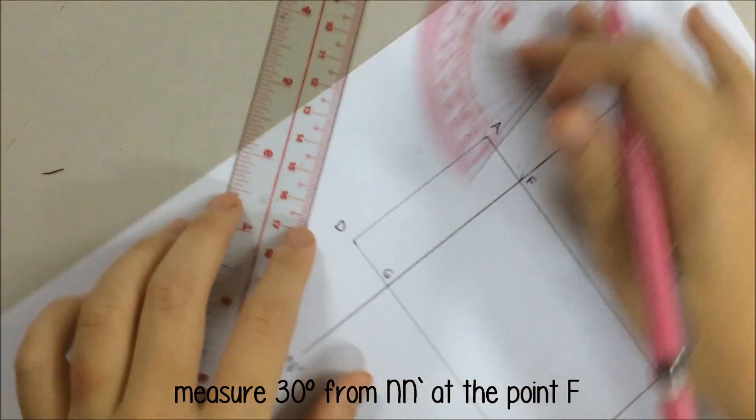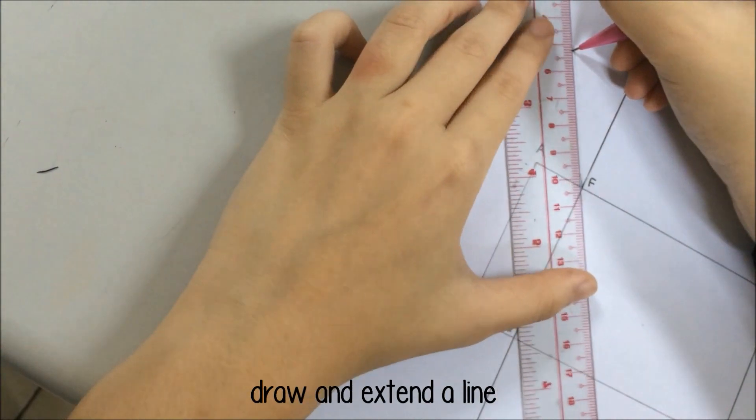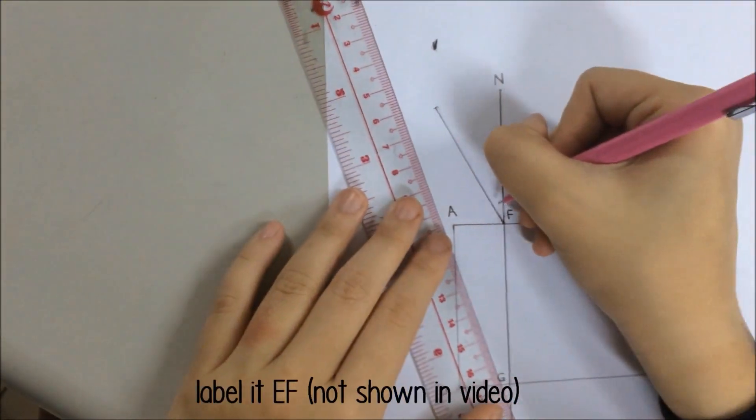Step 4: Measure 30 degrees angle on line NN at the point F. Label this line as EF.